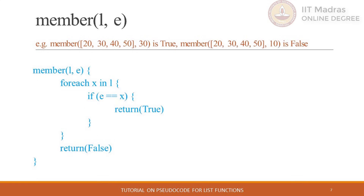Member is another special function which checks for the membership of an element in a list. It accepts two parameters — a list and an element — and returns a boolean value, true or false, based on whether the element is present in the list. If list L contains element e, the function will return true, which will stop the iteration of the for-each block and the member function will terminate. If that return statement does not execute at all, it indicates that the list L does not contain element e; in that case the for-each block will complete its execution and the default return statement will execute, providing the output value false.